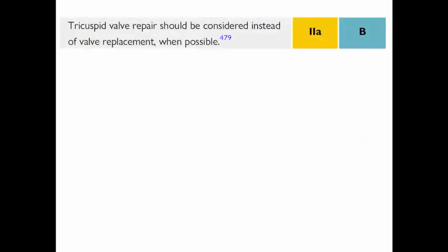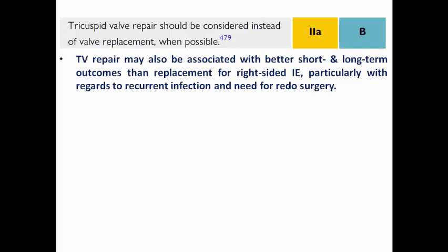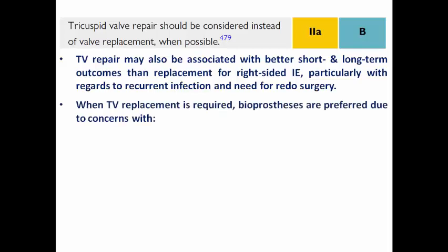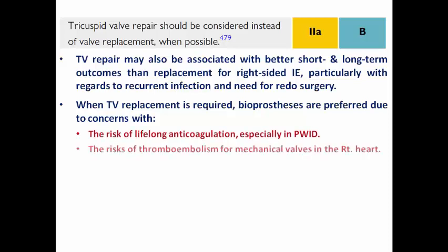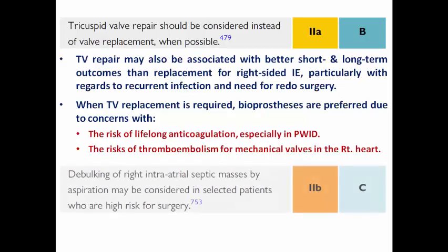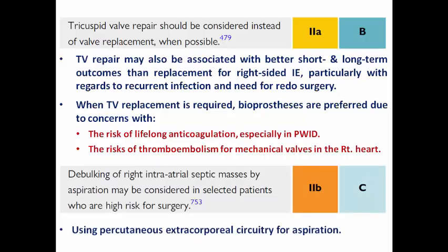If surgery is indicated, tricuspid valve repair should be preferred over replacement when possible and the valve is not completely destroyed, as repair is associated with better short- and long-term outcomes, lower risk of recurrent infection, and less need for redo surgery. If replacement is necessary, bioprosthetic valves are preferred due to concerns about lifelong anticoagulation with mechanical prostheses and the higher risk of thromboembolism from mechanical valves. Percutaneous aspiration for debulking of right intra-atrial septic mass is a Class 2b option for selected high-risk surgical patients.